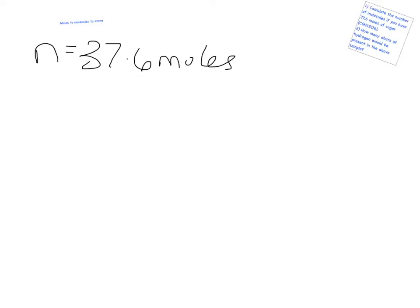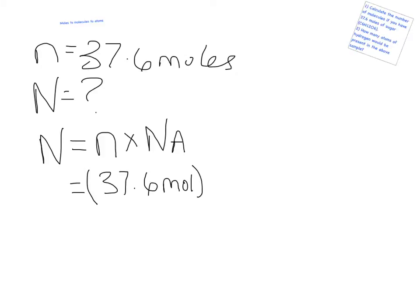The first question was how many molecules do we have? So we're going to use the equation: the number of molecules equals the number of moles times Avogadro's number. So the number of moles that we have is 37.6, and Avogadro's number is 6.02 times 10 to the 23, and that is molecules for 1 mole.